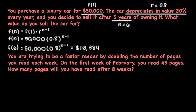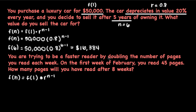This next problem states: you are trying to be a faster reader by doubling the number of pages you read each week. On the first week of February you read 45 pages. How many pages will you have read after eight weeks? Once again, let's start by writing our explicit formula and then going back to the word problem to find our numbers. Doubling is going to be our common ratio — we're multiplying the number of pages we read each week by two, so our r is two.